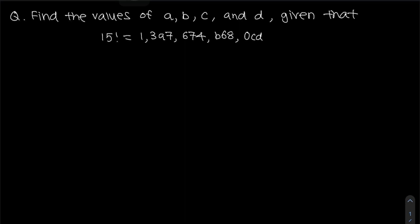Given that 15 factorial equals this huge number here — so what is 15 factorial in the first place? 15 factorial is actually equal to 15 multiplied by 14, and so on all the way until 1. So it is 15 times 14 times 13 times 12, all the way until 1. Now we want to work out what a, b, c, and d are.